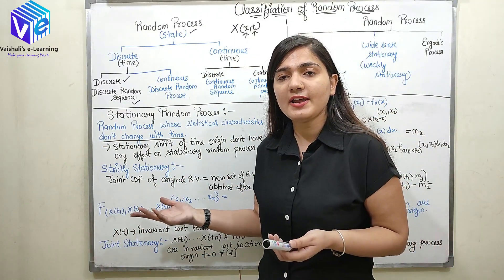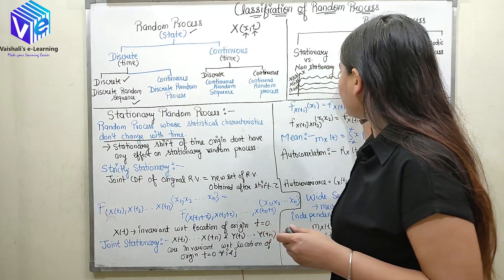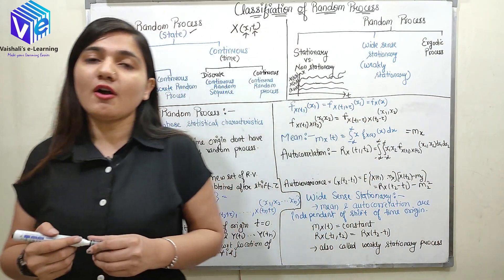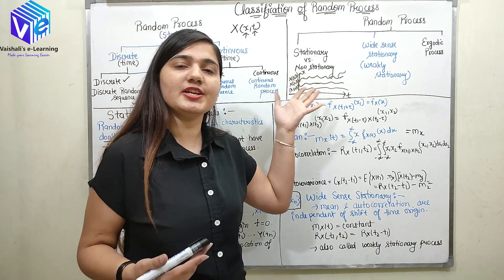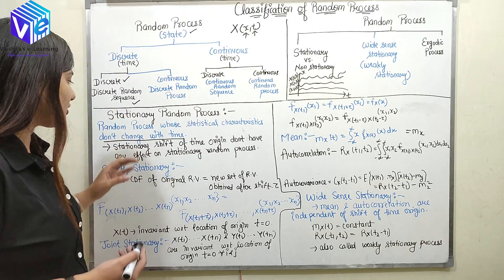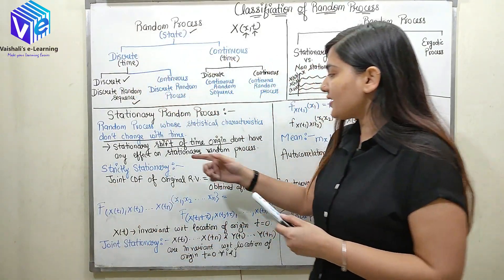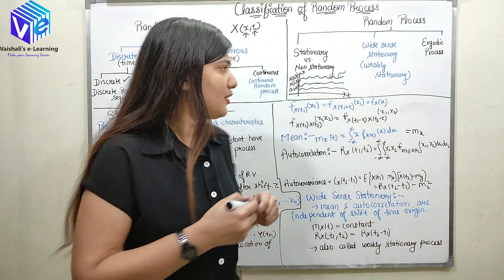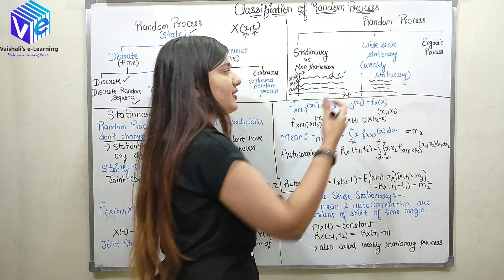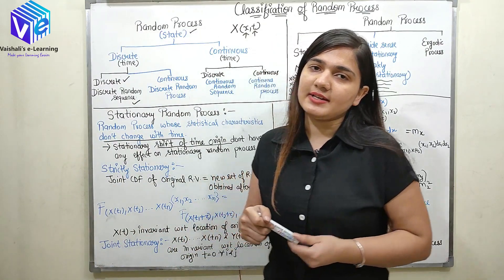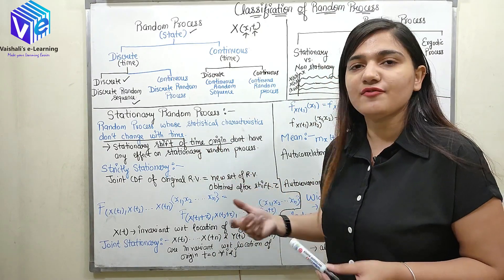If the statistical parameters are changing with time, then it is called a non-stationary random process. If I find the mean for this random process and the mean changes with time, then it is called non-stationary. If the mean and all statistical parameters are not changing with respect to time, then it is called a stationary random process. I can say a shift of the time origin has no effect on the stationary random process — shifting the time does not affect stationarity.